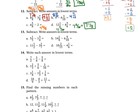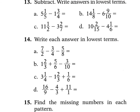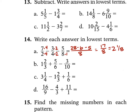For problem 14, write each answer in lowest terms. For A, using LCD of 8: 7 over 2 gives 28 over 8, 3 over 4 gives 6 over 8, and 5 over 8 stays. So 28 minus 6 minus 5 equals 17 over 8. Since 8 goes into 17 twice with 1 left over, the answer is 2 and 1 eighth.